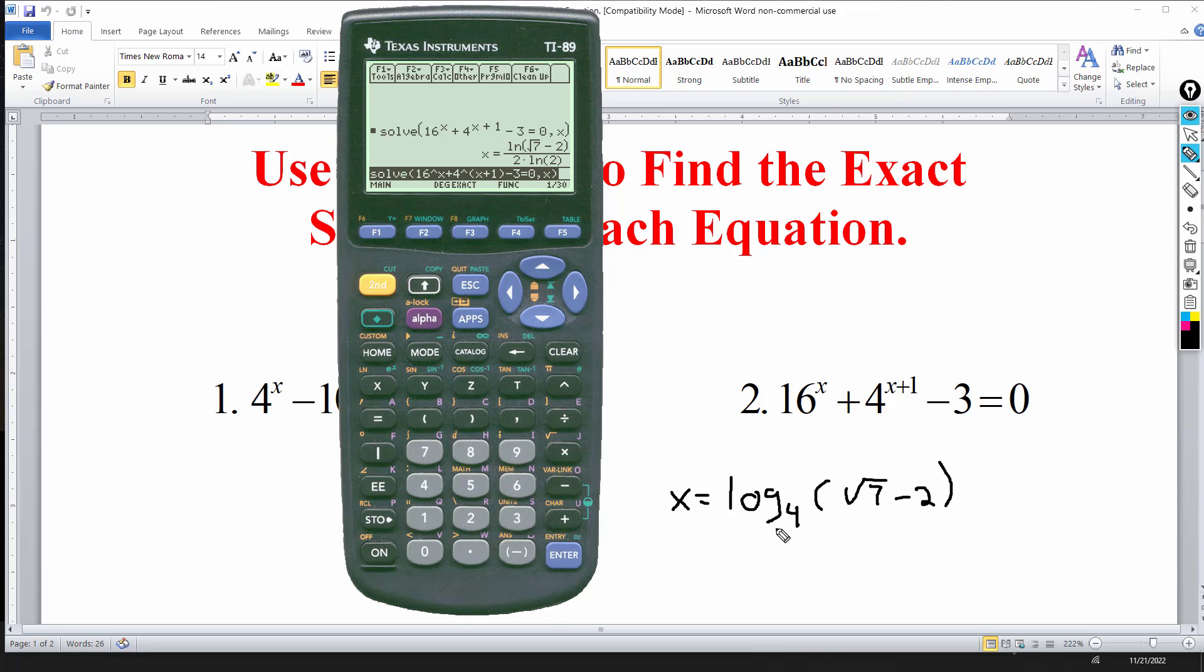This is the answer I believe I gave on the video. It could have been negative 2 plus the square root of 7 which is the same thing.